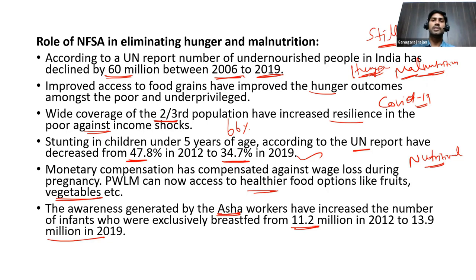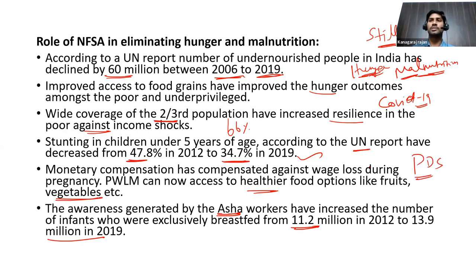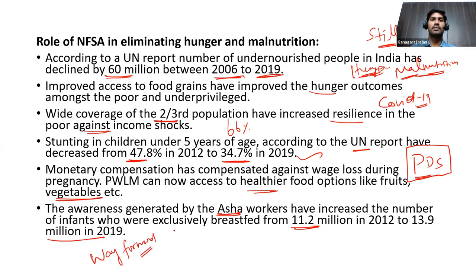The issue of hidden hunger — having enough carbohydrates and proteins but insufficient micronutrients — is a major problem. The challenges with the PDS system also persist. The way forward includes strengthening PDS through computerization to increase accountability and transparency, and including the promotion of millets in the PDS system.